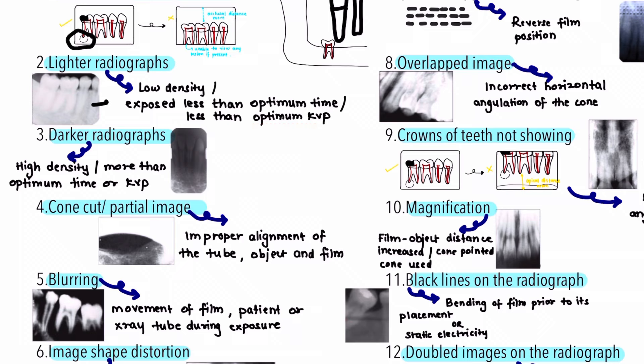The next projection error is lighter radiographs, which appear comparatively more white than normal because they have low density. Lighter radiographs can be caused by under-development (a processing error) or, in terms of projection errors, by under-exposure. Under-exposure occurs when the radiograph is exposed at less than the required mA, kVp, or time. The correction is to expose the film at a proper time, mA, and kVp.